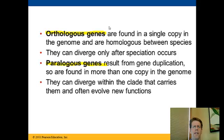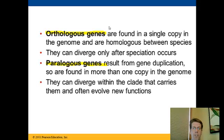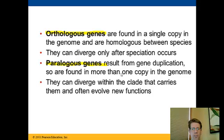Orthologous genes are a group of genes that were once the same gene in a common ancestor, but when a speciation event occurred they separated, and the two genes have been changing independently ever since. Paralogous genes, on the other hand, refer to gene duplication within a single species. For example, humans have two blood proteins — myoglobin and hemoglobin. Myoglobin is an oxygen storage molecule in muscle, whereas hemoglobin carries oxygen in red blood cells. Their functions are similar but not the same, and they result from gene duplication millions of years ago.